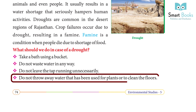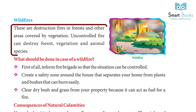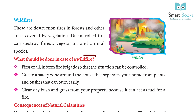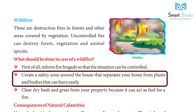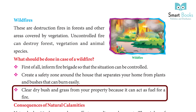Do not throw away water that has been used for plants or to clean the floors. Wildfires: These are destructive fires in forests and other areas covered by vegetation. Uncontrolled fire can destroy forests, vegetation and animal species. Inform the fire brigade so that the situation can be controlled. Create a safety zone around the house that separates your home from plants and bushes that can burn easily. Clear dry bush and grass from your property because it can act as fuel for a fire.